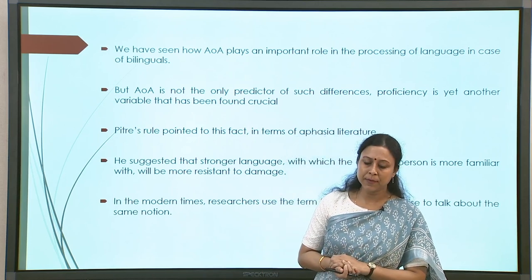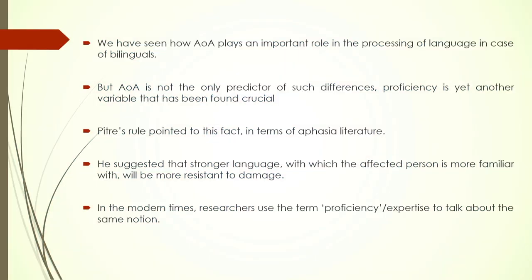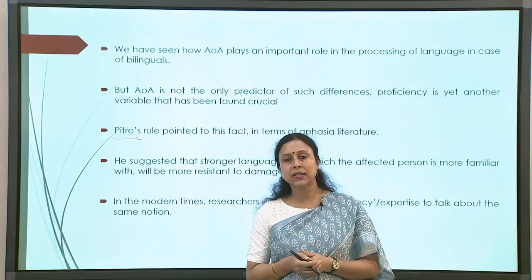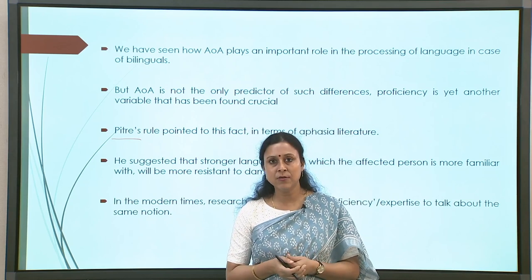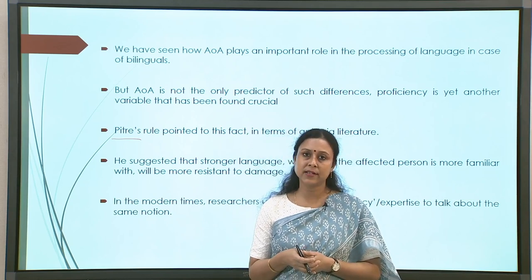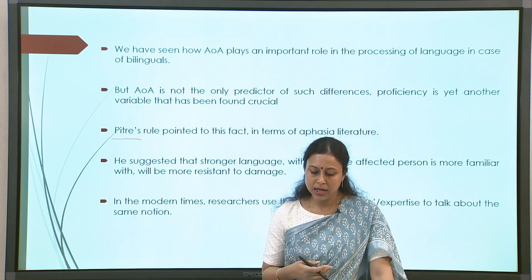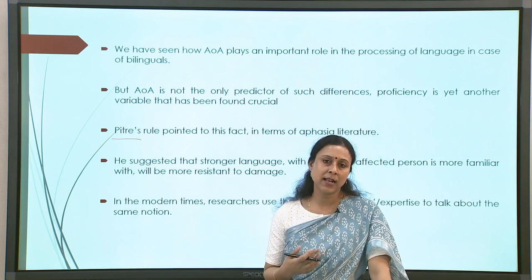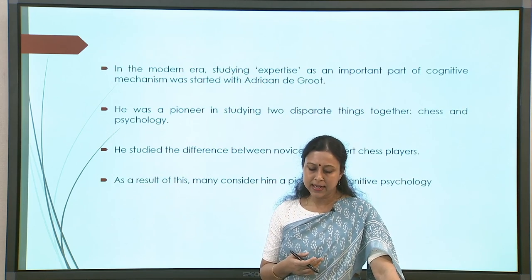Now we move on to the second parameter: proficiency. Proficiency refers to how well you use your language. This takes us back to Pitre's rule regarding aphasia — the language in which the participant is better and uses more is more resistant to disorders. The language in which you are more proficient will be more resistant, which is the core idea.